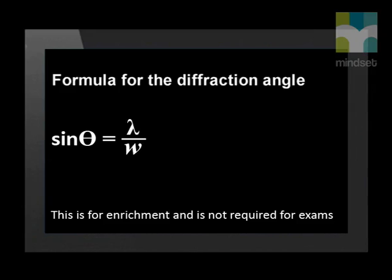We can be more precise about this relationship. The diffraction angle to the first bright line is called theta. We can write the relationship as sin theta equals the wavelength, lambda, divided by the slit width, W.